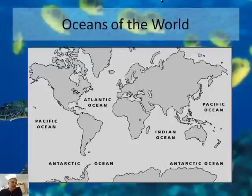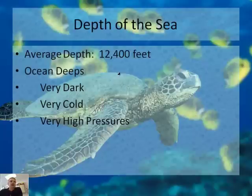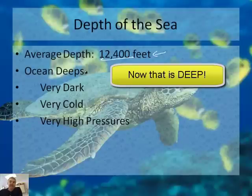The oceans of the world — just a brief introduction. Of course, you know there's the Pacific Ocean, the Atlantic Ocean, the Indian Ocean, and the Antarctic Ocean. There's sort of the Arctic Sea up here too, but it's hard to figure out how you want to organize the oceans. The ocean's an amazing place. The average depth of the ocean is 12,400 feet. That, my friends, is deep — really deep.